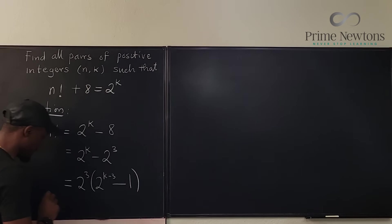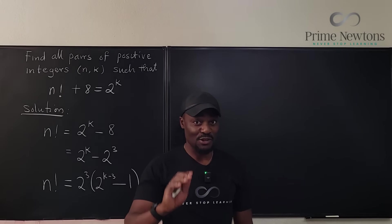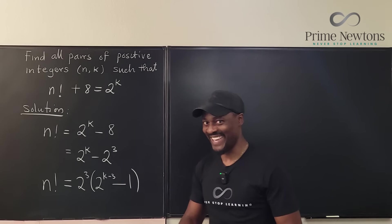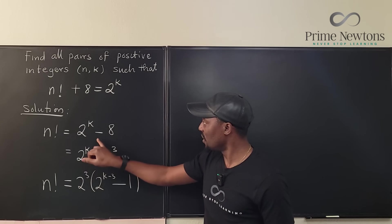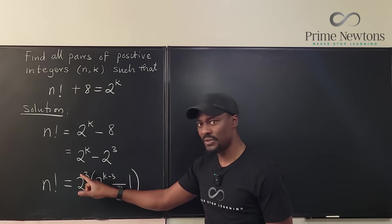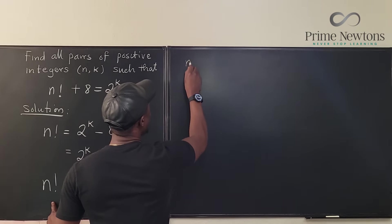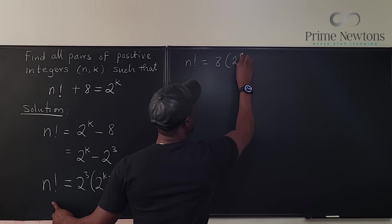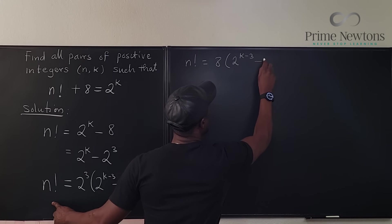Now something beautiful has appeared. From here, well, we know what 2 to the third is. I could have done this straight from here but I needed you to see that this is third. 2 to the third is the number we call eight, so I can say that n factorial is equal to 8 times 2 to the k minus 3 minus 1.